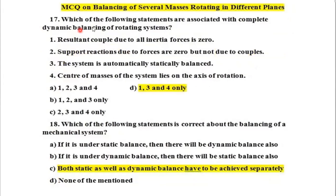Question 17: Which statements are associated with complete dynamic balancing? The resultant couple due to inertia forces must be zero; the system is automatically statically balanced (summation of forces = zero); and the center of mass of the system lies on the axis of rotation. Answer: statements 1, 3, and 4.